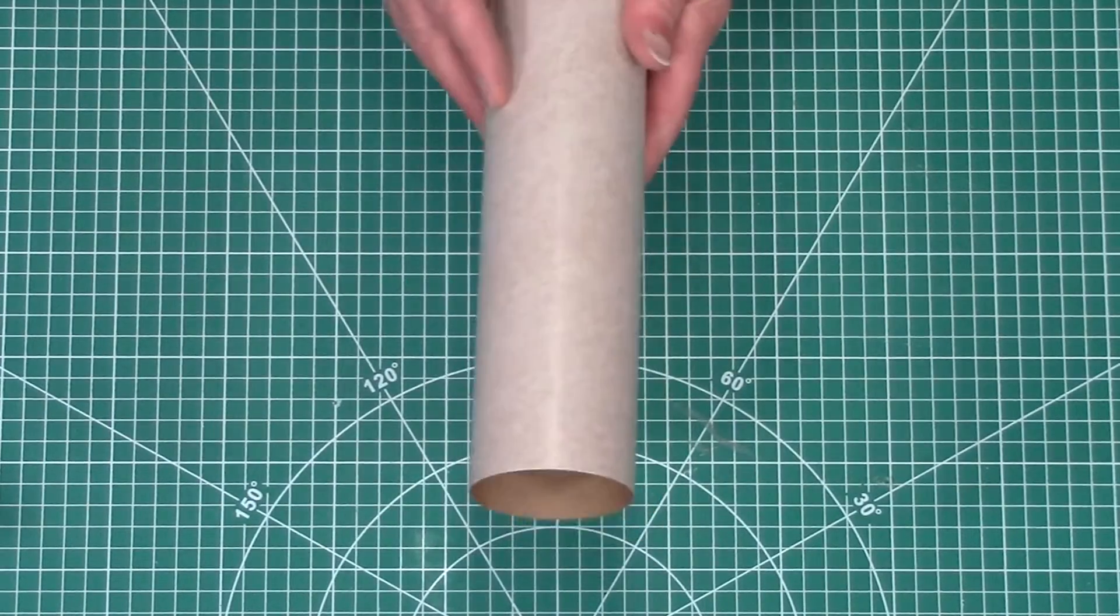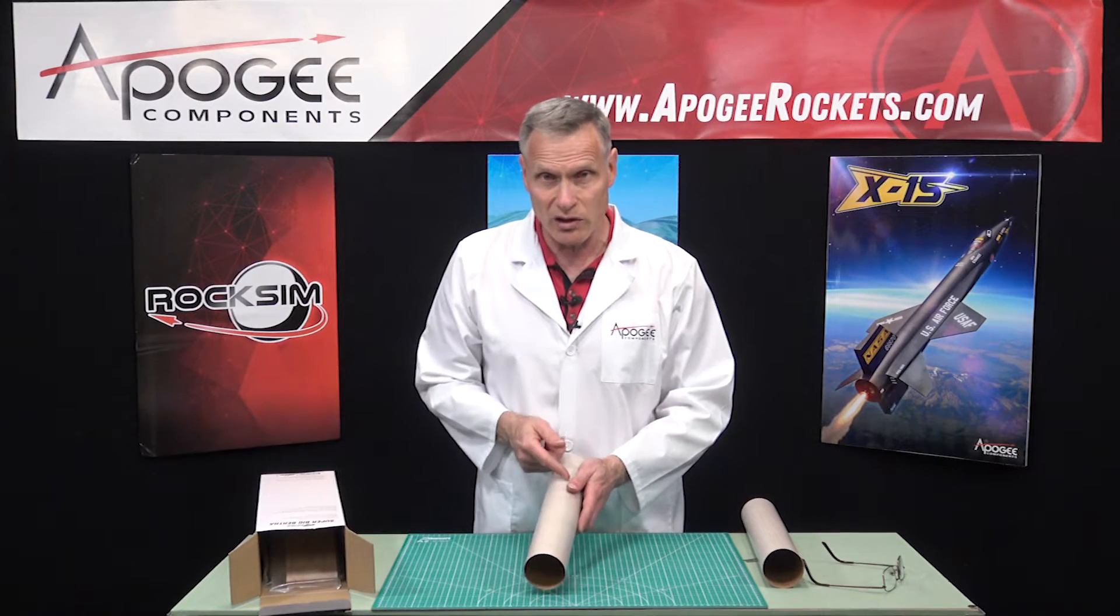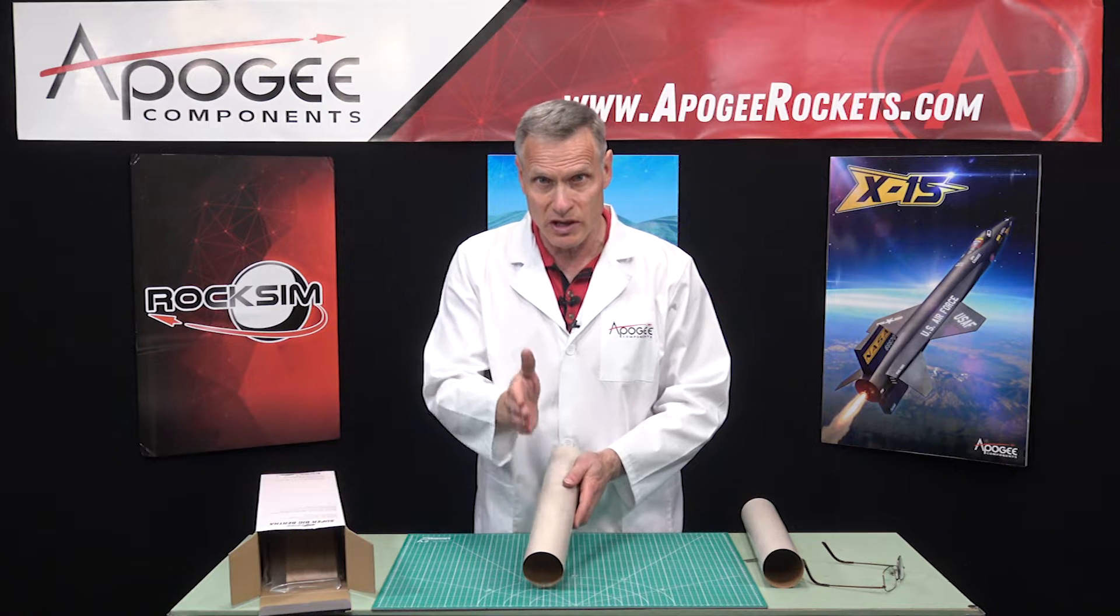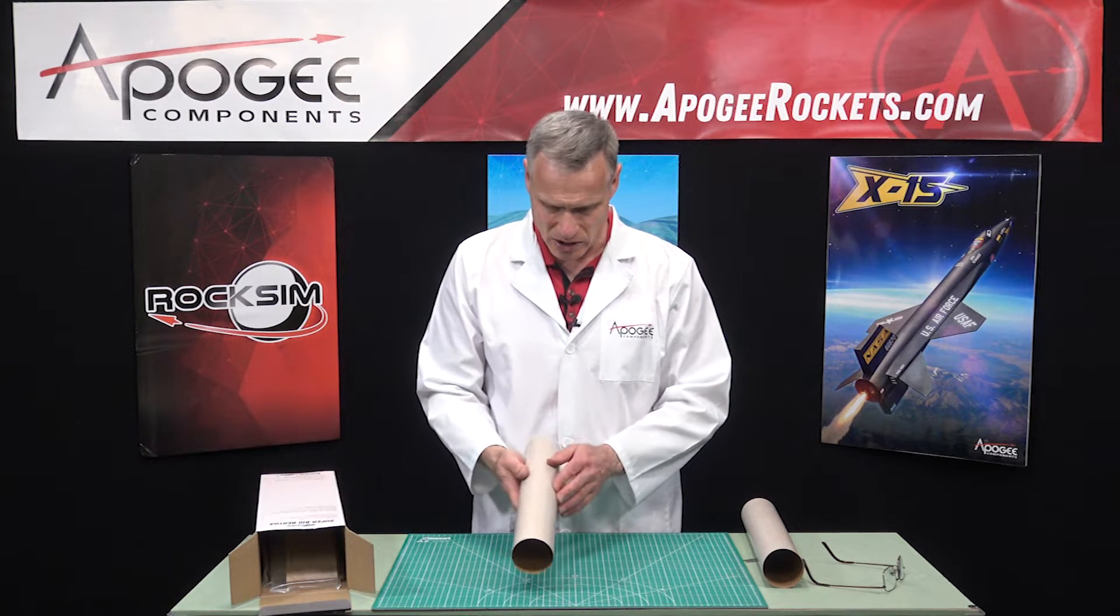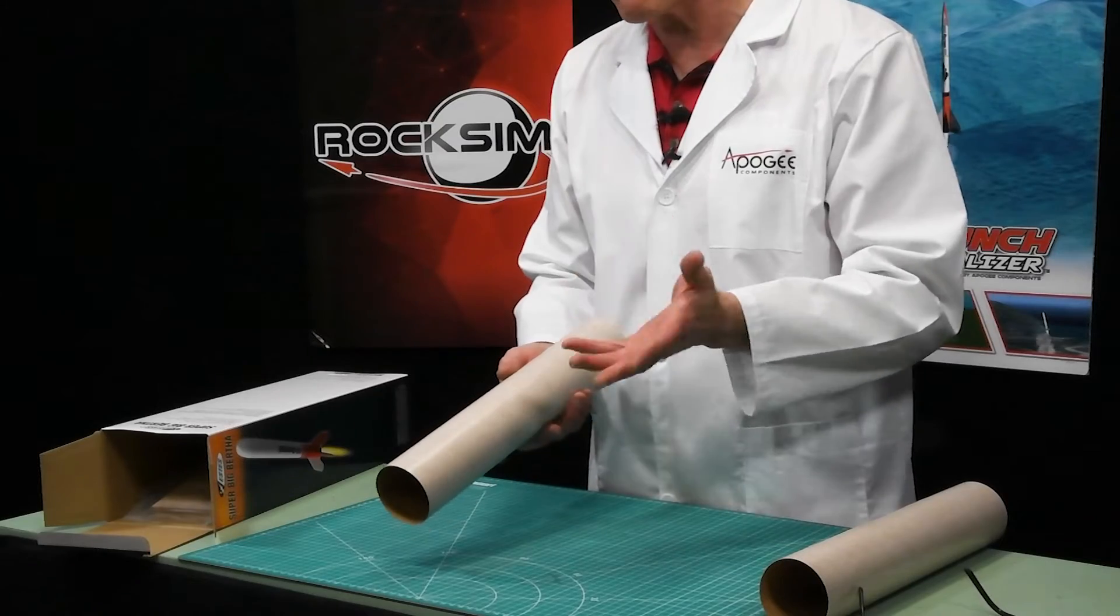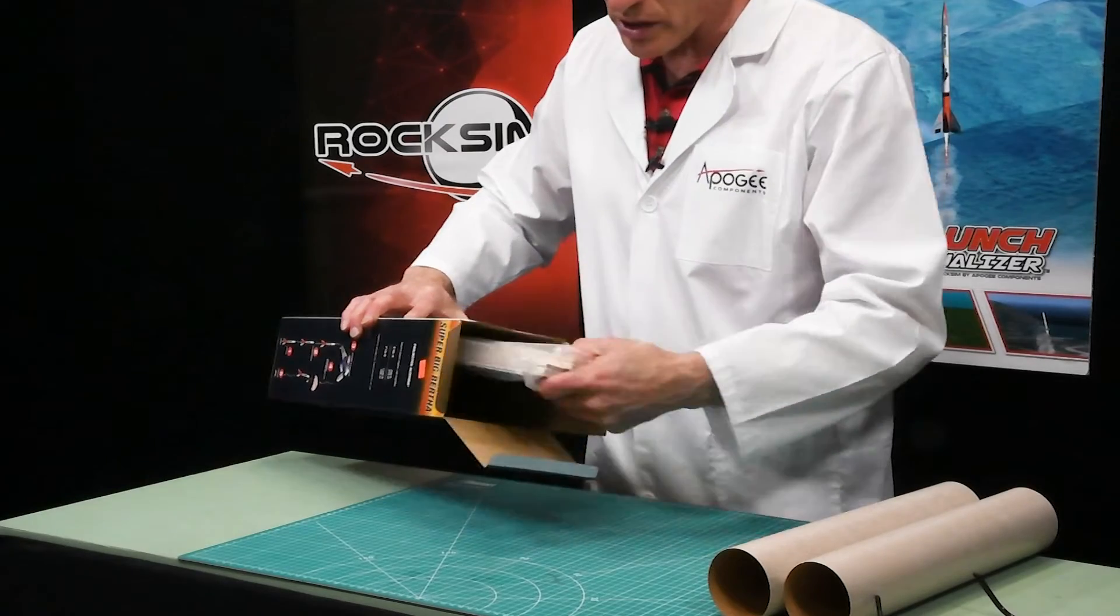They use a brown tube, and I'm not sure why they use brown. We use white. And the reason we use white is so when you draw lines down it for like putting your fins on or launch lugs, you can see the lines a little bit better. Brown is a little bit cheaper, I assume, which is why Estes might went with it.